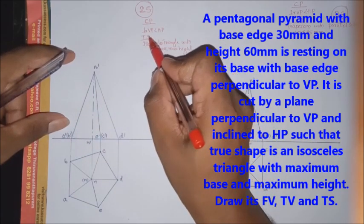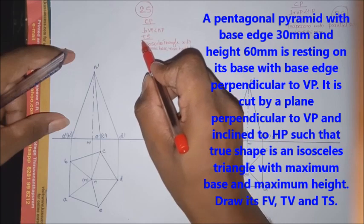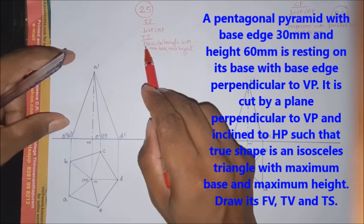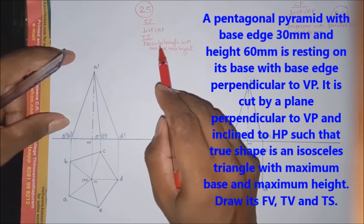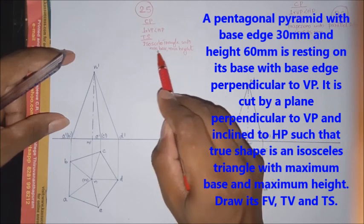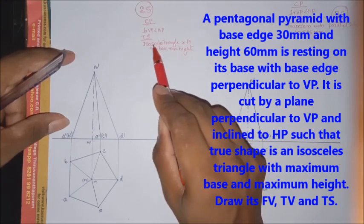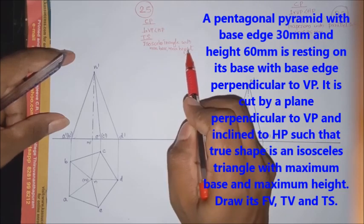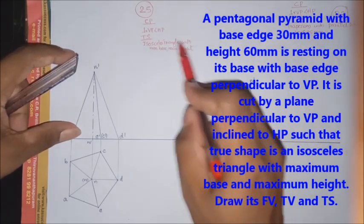True shape is a true shape given problem. TSN is true shape. True shape given problem is an isosceles triangle with maximum base and maximum height. Here are the two given values. True shape is an isosceles triangle. Base is maximum, height is maximum. So, if we have the given data, we have done it.